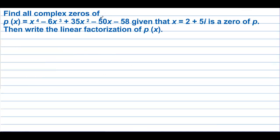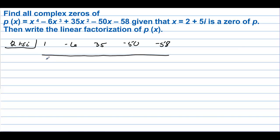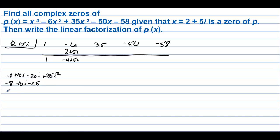Find all complex zeros given that 2 plus 5i is a zero of p, then write the linear factorization of p of x. We plug 2 plus 5i into synthetic division with coefficients 1, negative 6, 35, negative 50, negative 58. Bring down the 1. We have 2 plus 5i, which gives negative 4 plus 5i. Multiplying these: we get negative 8 plus 10i minus 20i plus 25i squared, which equals negative 8 minus 10i minus 25, giving negative 33 minus 10i.